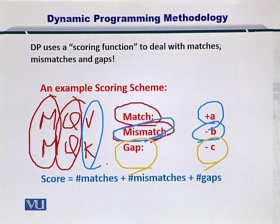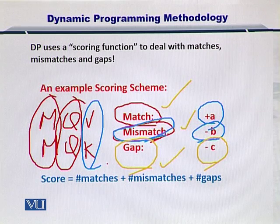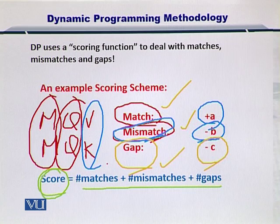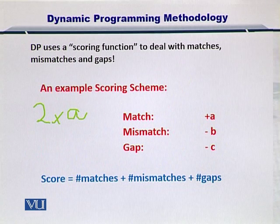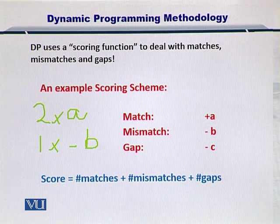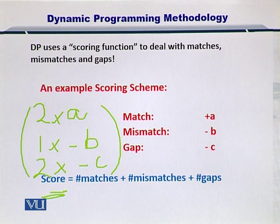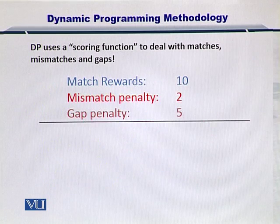The scoring scheme for dynamic programming is based on three elements: match, mismatch, and gap. The overall score is defined by the sum of all matches, mismatches, and gaps. For example, if you have two matches, your score is 2 × A; one mismatch gives 1 × (−B); and two gaps give 2 × (−C). You sum all of that up to get the overall alignment score. You then compute the score for all possible alignment combinations and choose the maximal score.